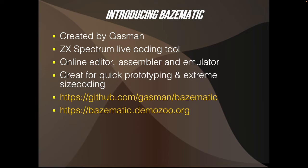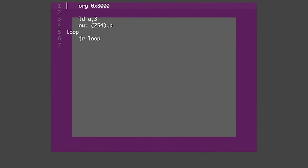Now let's talk about the Basematic tool. It was created by Gasman as a ZX Spectrum live coding tool. It has an online editor, assembler and emulator, all rolled into one. It is great for quick prototyping and extreme size coding. Here you will find links to the GitHub as well as the Basematic tool itself. Let's check it out — here we are. You can see some Z80 assembler code, and here we will do some of the programming in the rest of the seminar.